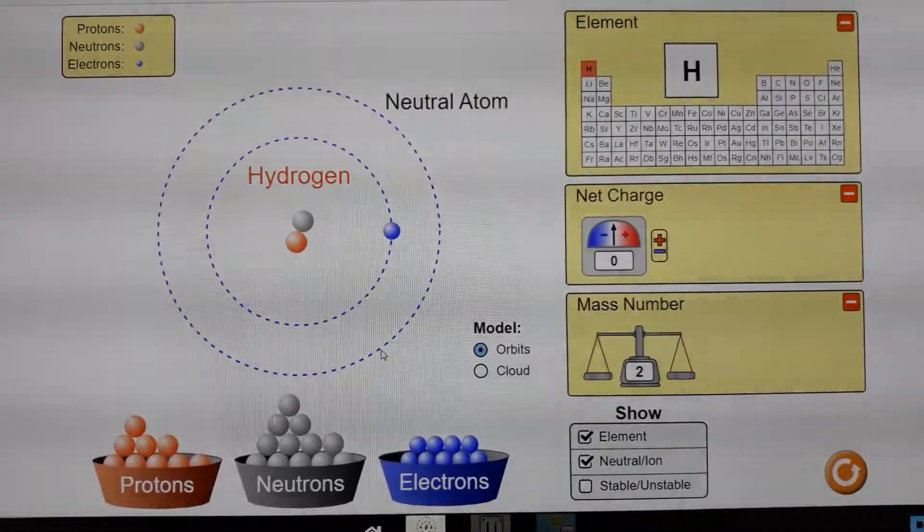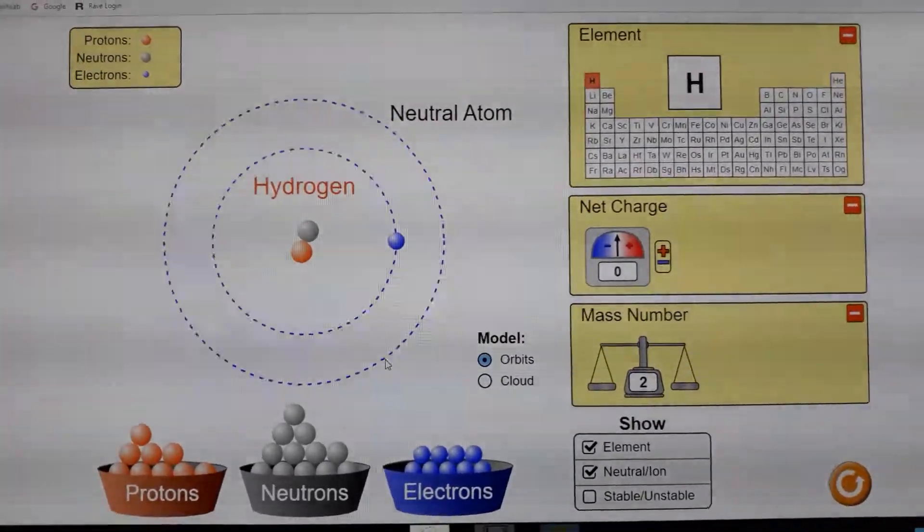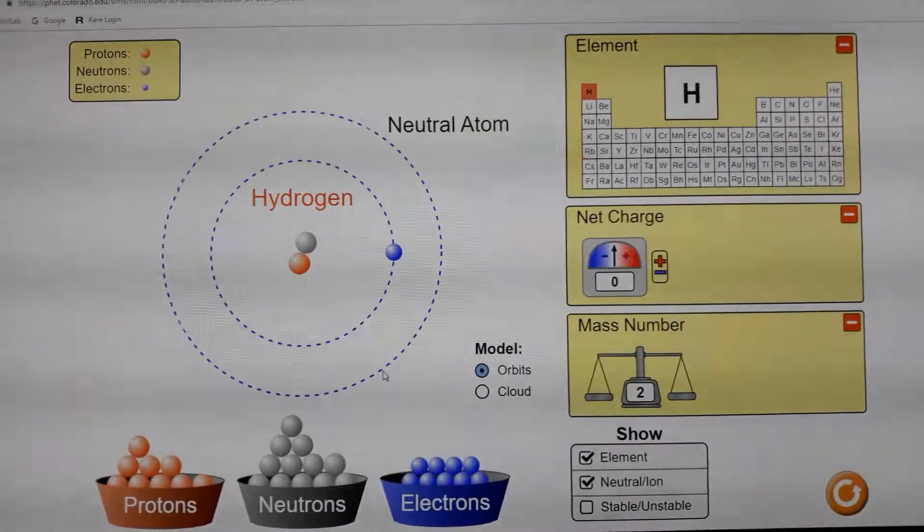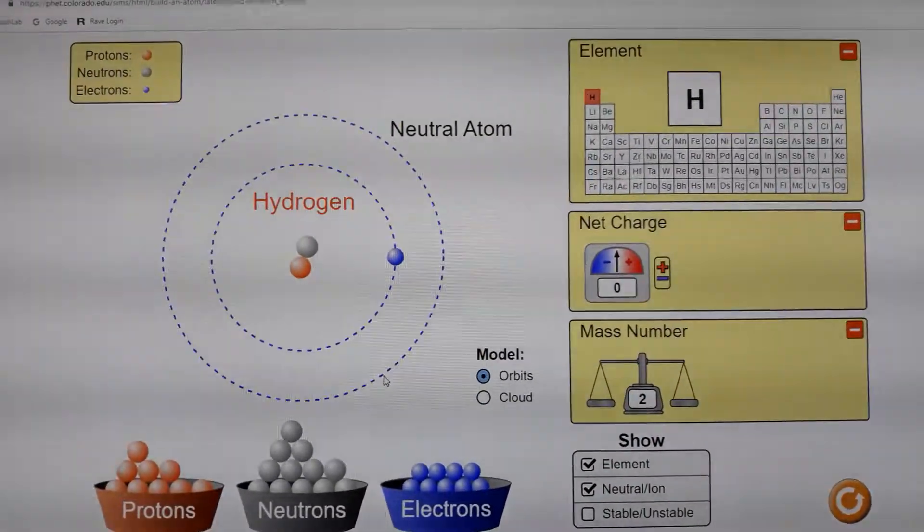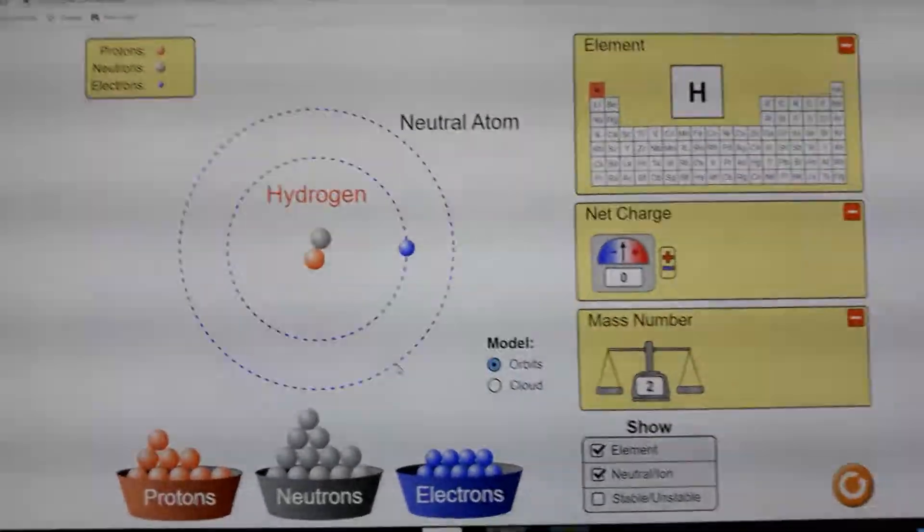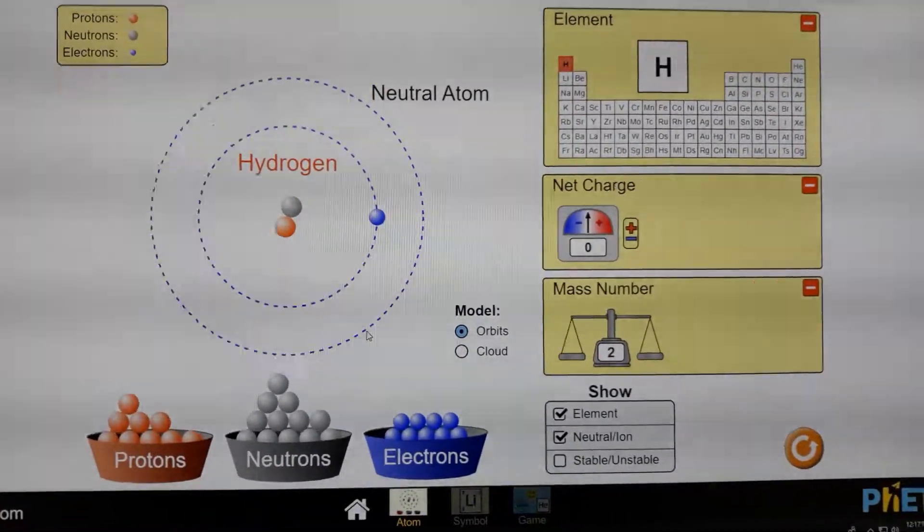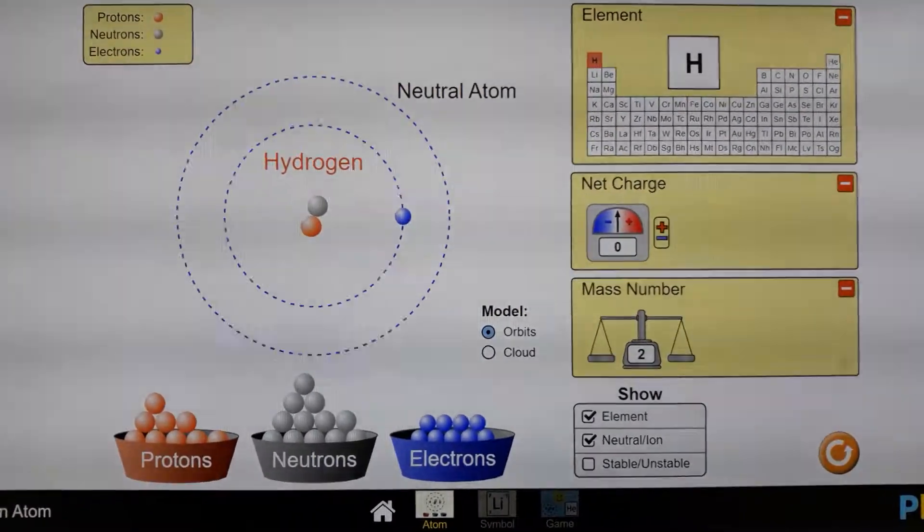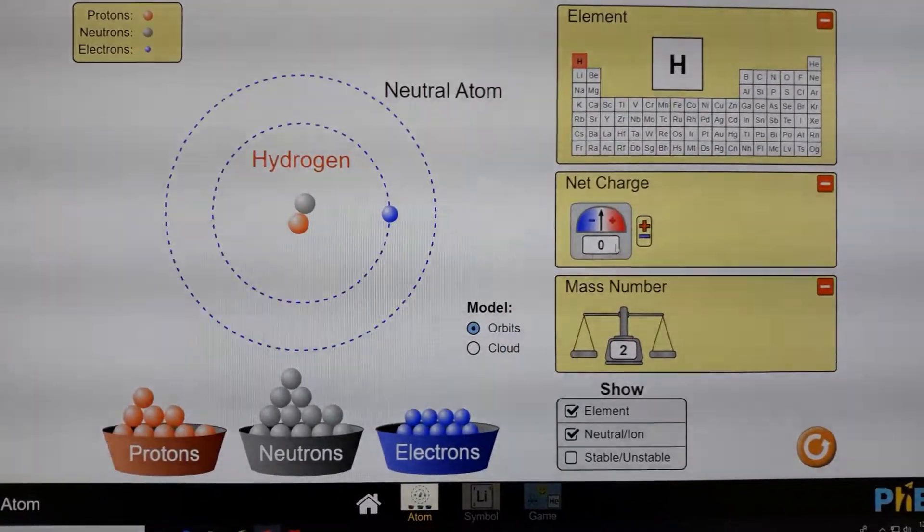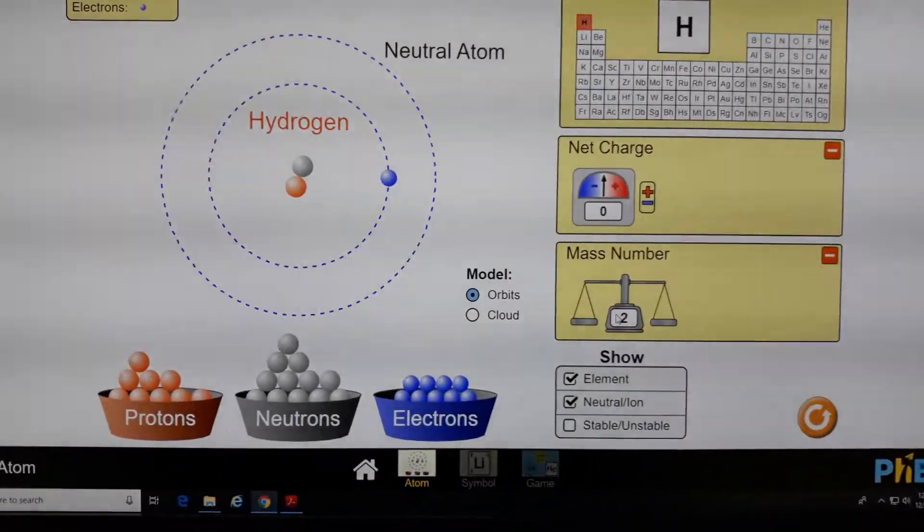The inner orbital is able to support just two electrons. So when you have just two electrons, both are going to be in the inner orbital. And when it's more than two, then the other electrons are going to the outer orbital. As you see now, the net charge has changed to zero, and the mass number is now two.